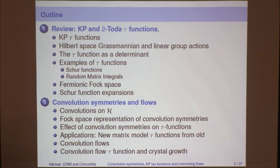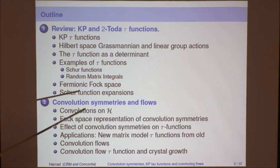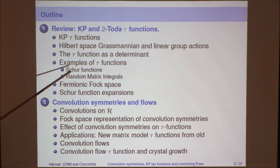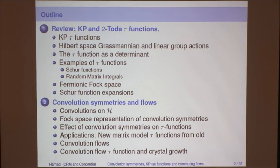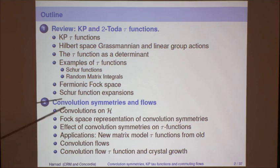Here is the outline. I'll give a review of KP and 2-Toda tau functions in terms of infinite-dimensional Grassmannians and linear group actions. The tau function naturally appears as a finite or infinite determinant, and I'll give two simple examples of basic building blocks for tau functions. Schur functions can all be expressed as linear combinations satisfying certain relations. The standard example is random matrix integrals. Then I'll recall the fermionic Fock space construction, which is very natural — it all goes back to Sato and his school, and to some extent Segal and Wilson.